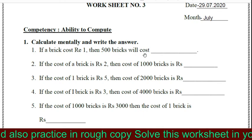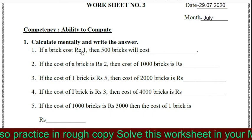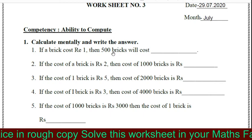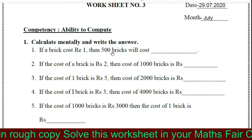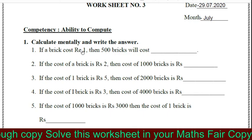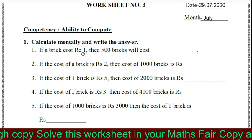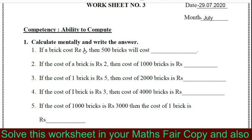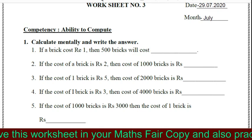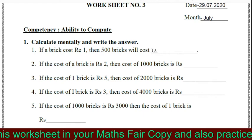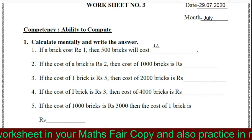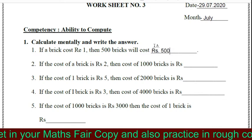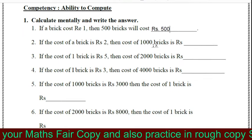That means, if a brick costs rupees 1, then 500 bricks cost rupees 1 each. So 1 brick is 1 rupee — then 500 bricks? 500 ones are 500. So the cost of 500 bricks will be rupees 500. So you can write rupees 500.